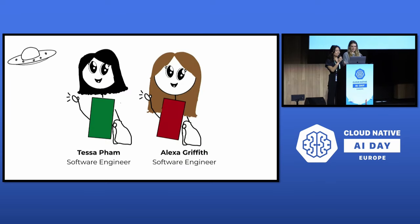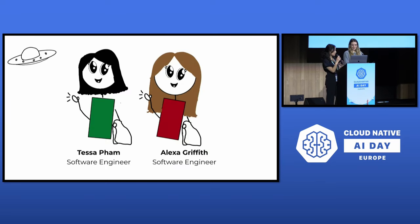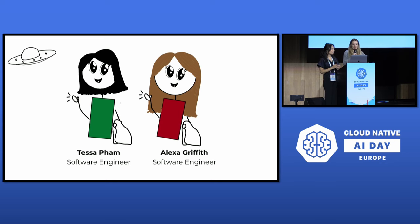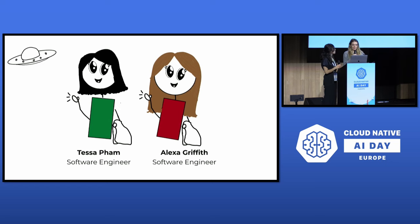My name is Tessa Pham, I'm a software engineer at Bloomberg. And my name is Alexa Griffith, I'm also a software engineer at Bloomberg. We both work on the inference team under Cloud Native Compute Services.